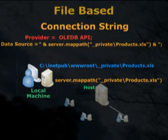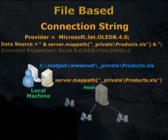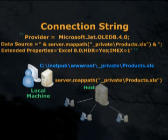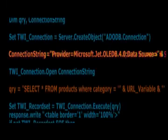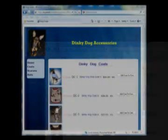To wrap up this connection string, I need to add the correct provider for the Microsoft Office Excel .XLS file I want to connect to, which is Microsoft.Jet.OLEDB.4.0. And because I'm connecting to an Excel file, there are some extended properties that need to be added to complete the connection string. And there you have it — a connection string to a Microsoft Office Excel .XLS file using the OLEDB provider. If I put this connection string in quotes and set it equal to a variable called 'connection string' and insert it into the appropriate VBScript, it becomes the connection string for the Dinky Dog Body page, which displays the various product categories for the Dinky Dog Accessories website.